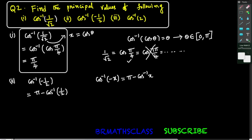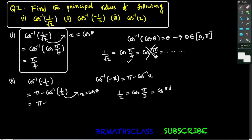This can be written as pi minus cos inverse of 1 by 2. Now, cos inverse of 1 by 2 is of the form cos inverse x. I want to write x in the form of cos theta so that I can use the cos inverse of cos theta formula. From the trigonometry table, 1 by 2 means cos 60 degrees, that is pi by 3. Note that cos 5 pi by 3 is also 1 by 2. Pi by 3 is in the closed interval 0 to pi.